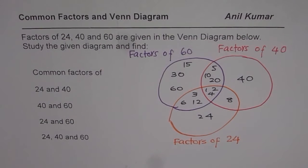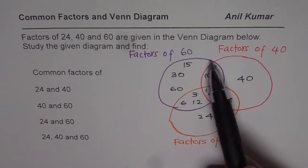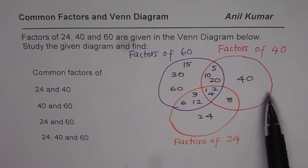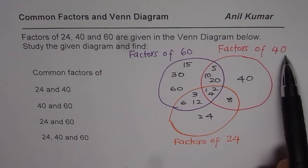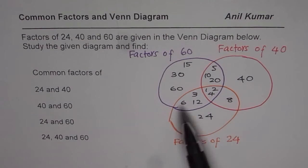The question is: factors of 24, 40, and 60 are given in the Venn diagram below. You have these circles. In the purple circle we have factors of 60. In the red circle we have factors of 40. And in the orange circle we have factors of 24.